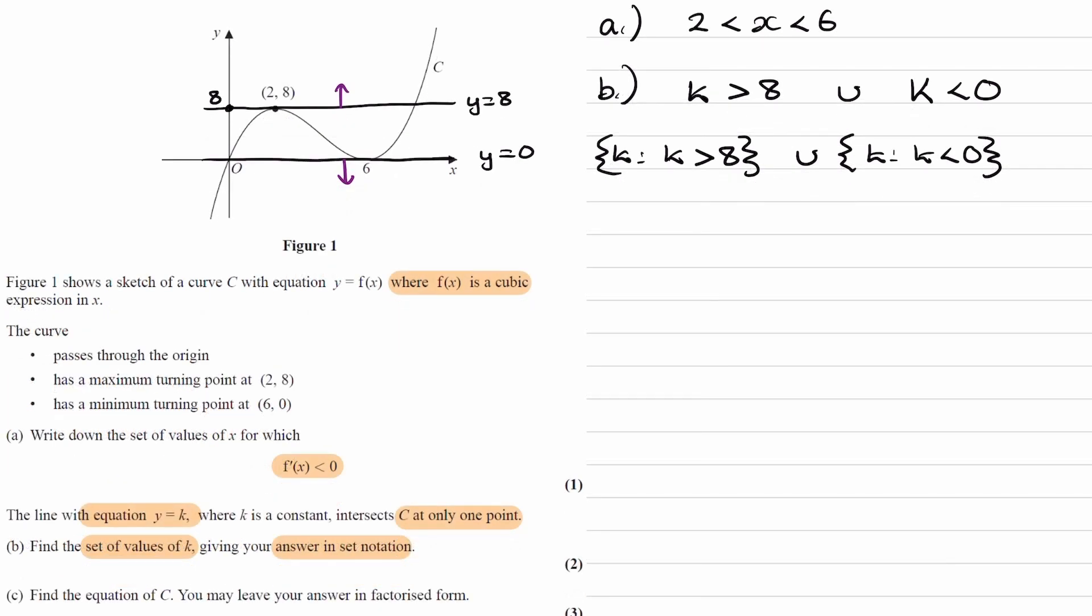And finally, for part C, we have find the equation of C, and it says also you may leave your answer in factorized form. The may in this case just means do it, leave your answer in factorized form. I'm not sure why they chose that word, probably just a British thing. So I'll rub out what we have on this graph.